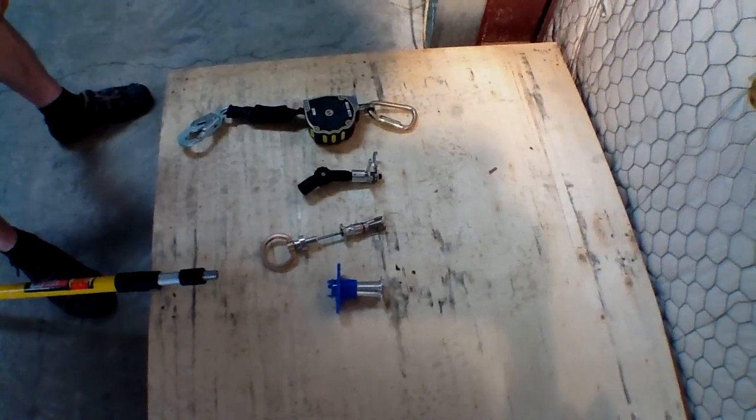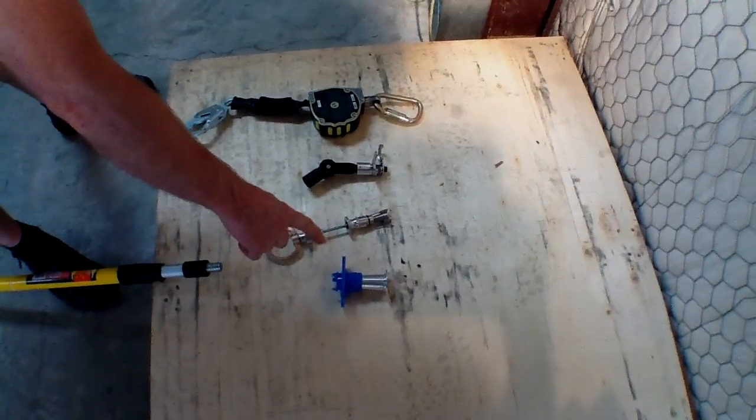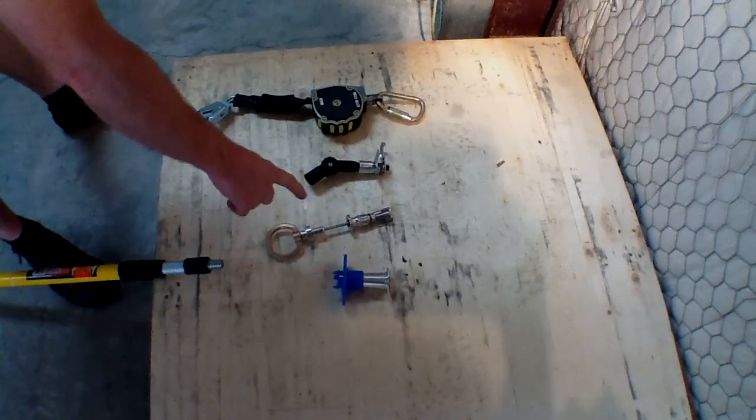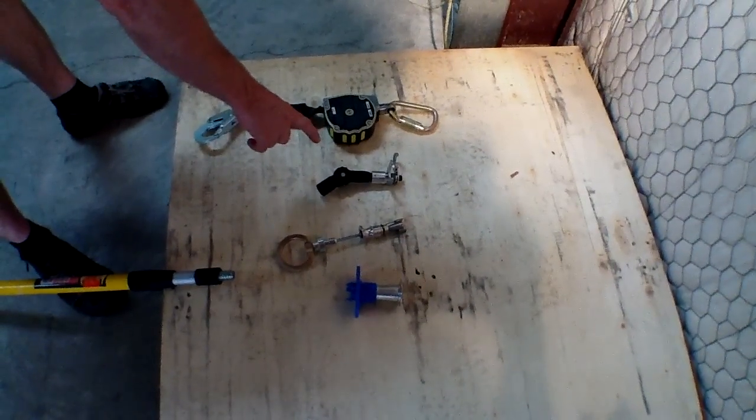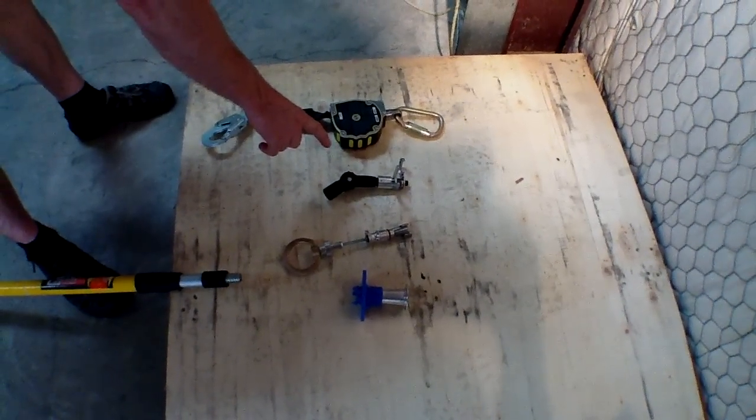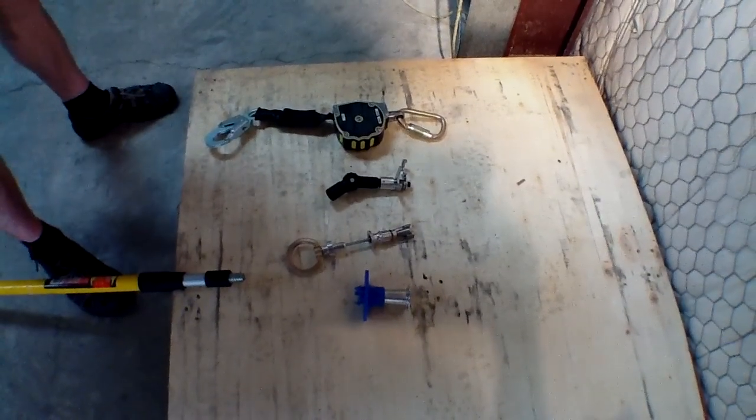This is a ClimTac concrete anchoring system. It consists of a receptacle that's embedded into the concrete ceilings. It has an anchor that goes into the receptacle and what we call the stick clip, which is a device that removes and also inserts the anchor into the receptacle. I will demonstrate.